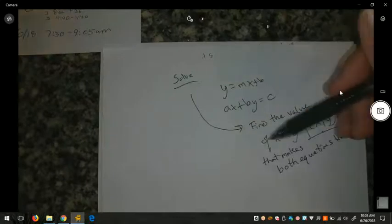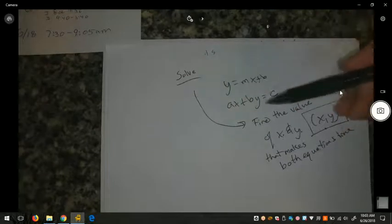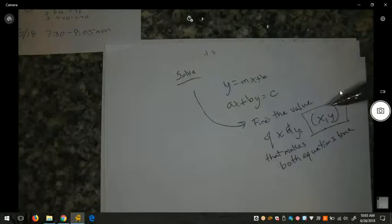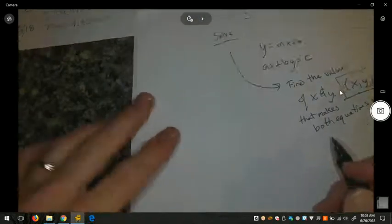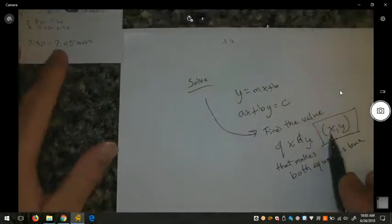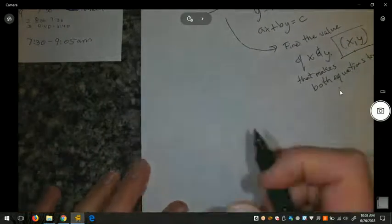Same thing here. When we find our value of x and our value of y, if I plug them into this equation and this equation, the equation should still be balanced. What that means graphically or visually is that there's going to be a point where the two lines meet, possibly.